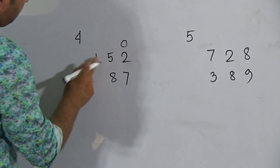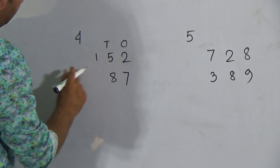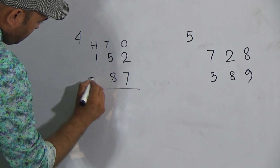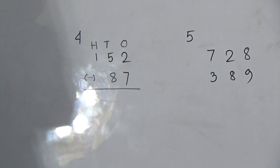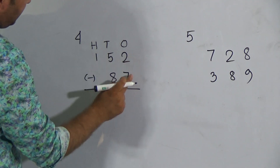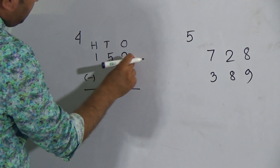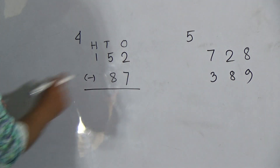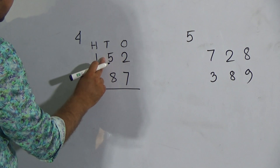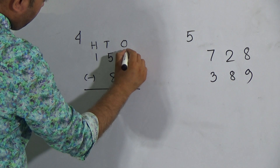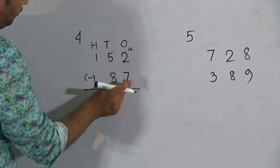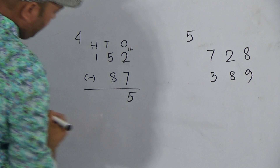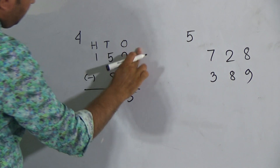Two and seven is the ones place digit, five and eight is the tens place digit, and one is the hundreds place digit. Now draw a line and put a minus sign. Look here — the ones place digits are two and seven. The top digit is two and the bottom digit is seven. Two is smaller than seven, so we have to borrow one from the next column, which is the tens column. After borrowing, it will be twelve. Then we subtract seven from twelve — seven from twelve — it will be five, and we carry one.